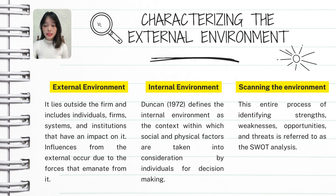The third approach is combining the environment — looking at both internal and external factors that affect a business. This helps the company understand its current situation and plan for the future. One common method for doing this is called a SWOT analysis, which is a tool that helps businesses look at four key areas: strengths, weaknesses, opportunities, and threats.